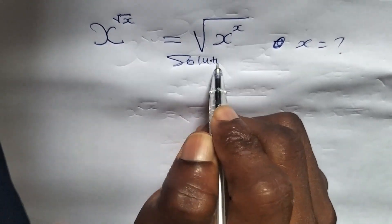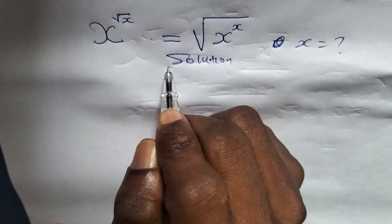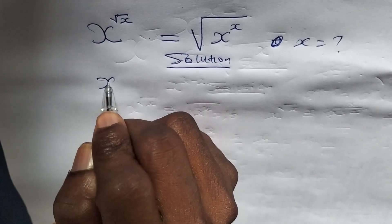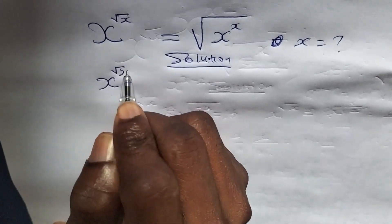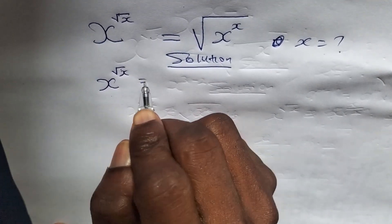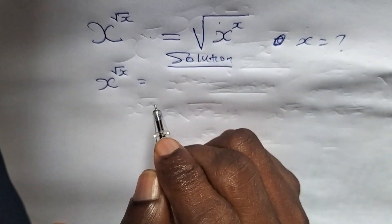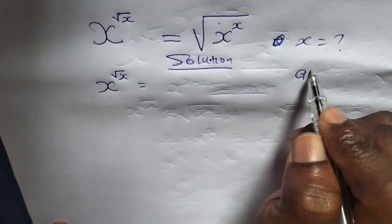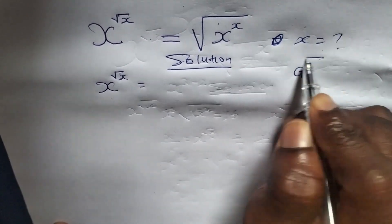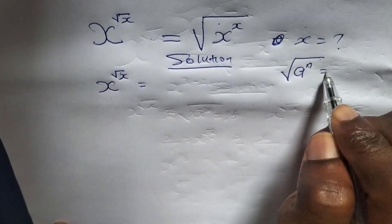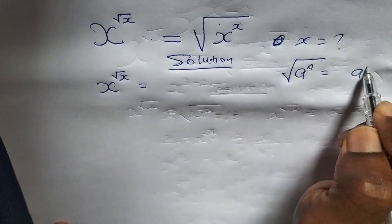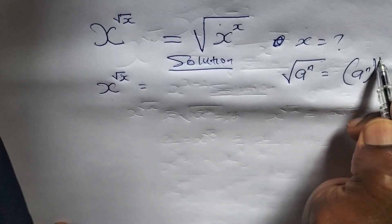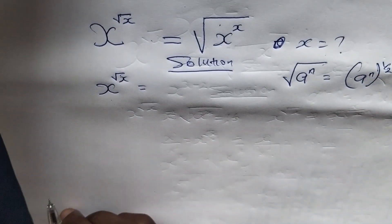We can see the solution. Write the question which is x to the power of root of x is equals to root of x to the power of x. Recall from the principle of indices: if you are having a to the power of n, root n is also equals to a to the power of n, open bracket close bracket, to the power of 1 over 2.